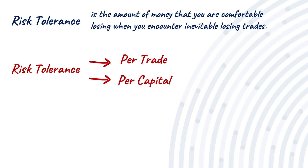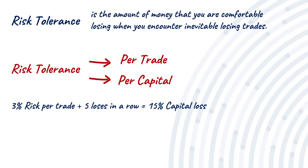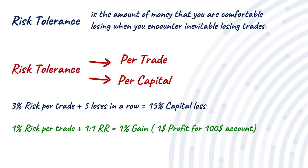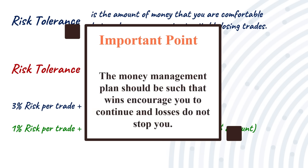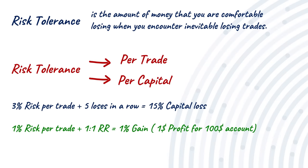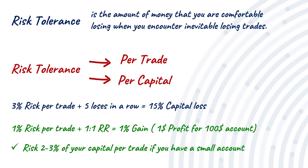If you risk more than you're willing to lose on a specific trade, your emotions will control the outcome of that trade. For example, if you risk 3% of your initial account size per trade, five losing trades in a row will reduce your capital by 15%. But why don't we risk very smaller percentages? The amount of your risk on each trade determines the amount of gains as well. If you have a small account and you risk 1% per trade and your risk-to-reward ratio is 1-to-1, you will gain 1% per trade, and if it does not satisfy you after all the hard work, you will get discouraged. Your money management plan should be such that wins encourage you to continue and losses do not stop you. If I was a beginner with a small account, I would probably risk 2–3% of my capital per trade.